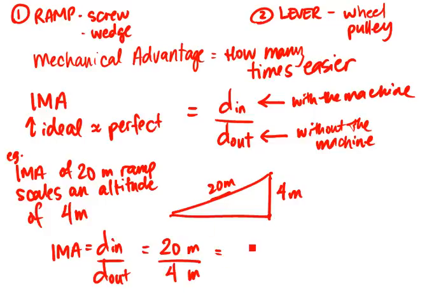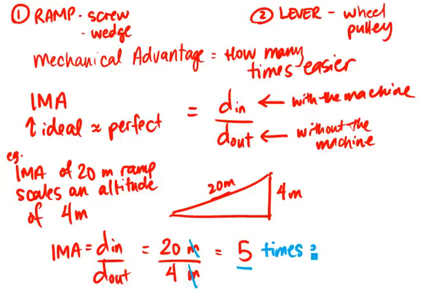The distance output — the distance without the machine — would have been 4 meters from ground to the top. I divide 20 by 4 and I get 5. Because I have meters divided by meters, there are no units; they cancel each other out. So I'm just left with 5, which means it is 5 times easier in a perfect world to use a 20-meter ramp than to raise something 4 meters off the ground — meaning I would need 5 times less force to do the same amount of work. That is ideal mechanical advantage.